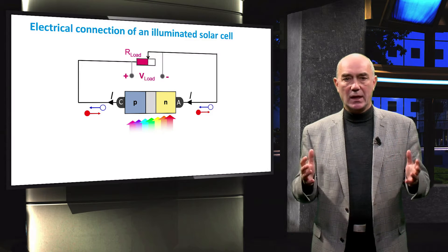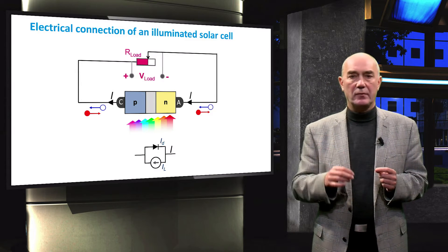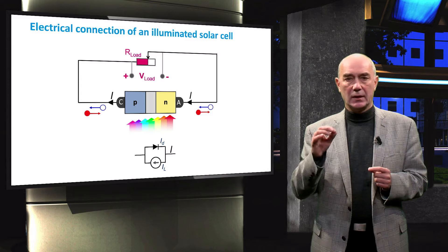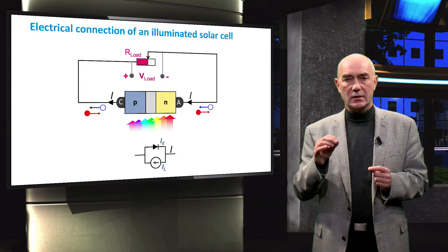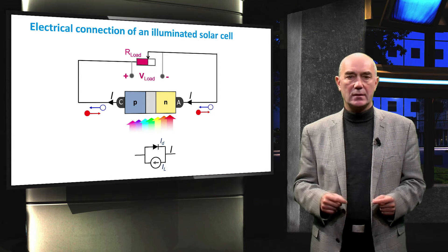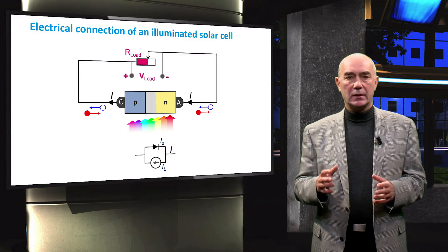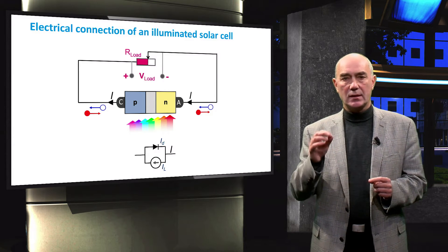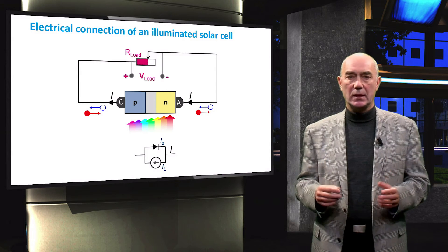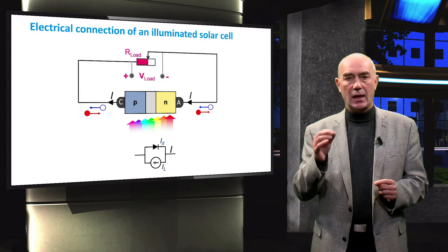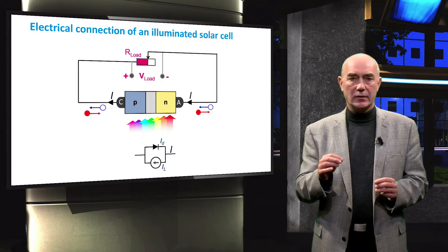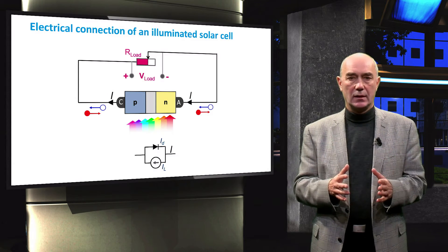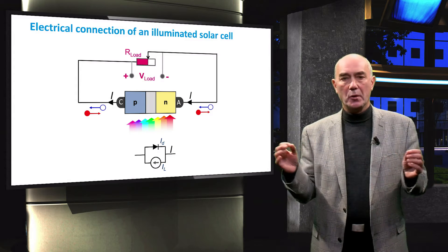At the bottom of the slide is the schematic circuit symbol of an illuminated PN junction diode — the symbol of an ideal solar cell. One part of the symbol is a PN junction diode operating in dark, with current labeled ID. There is also a current source representing the photocurrent generated by the solar cell, labeled IL. The resulting current flowing through the solar cell and external circuit is the sum of these two currents, which oppose each other.